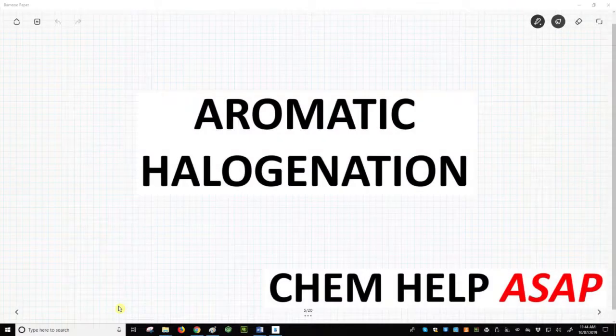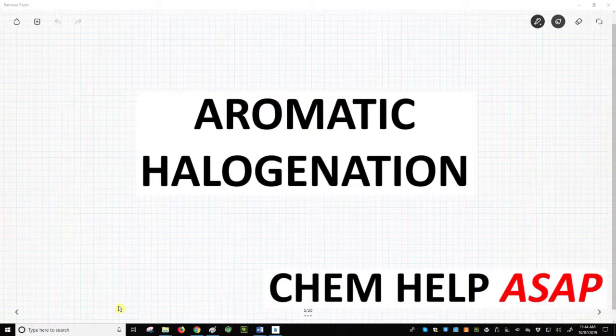Hello from ChemHelp ASAP. A very common EAS reaction involves adding a halogen to an aromatic ring.